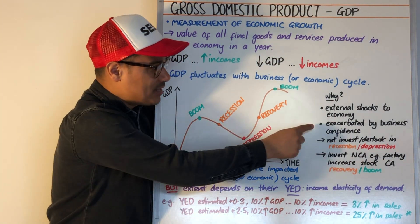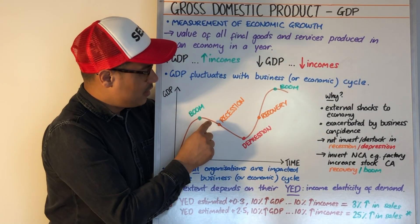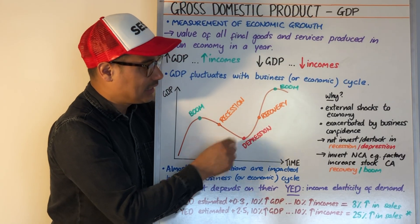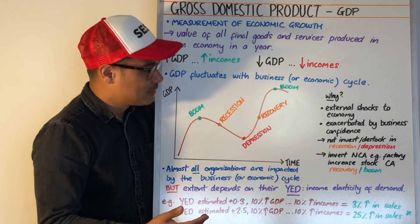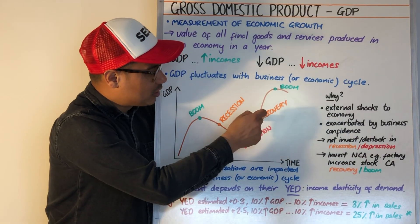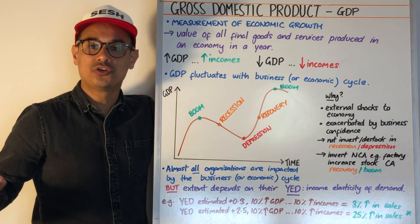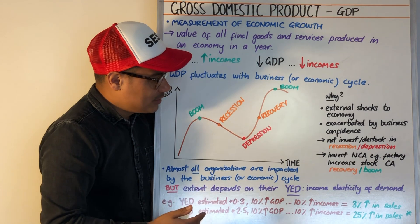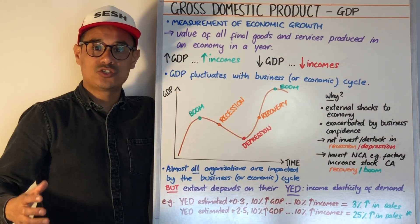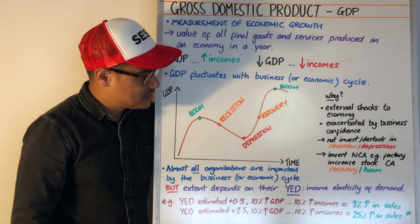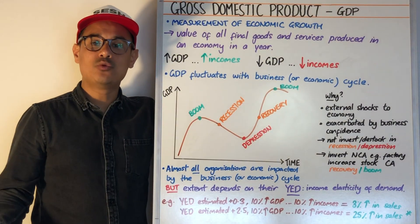When you have these external shocks, they tend to be exacerbated by businesses and business confidence. In a recession or depression phase, businesses are unlikely to invest and are likely to de-stock — reducing the size of their stock — because they expect less in sales. On the other side, in a recovery or boom phase, businesses are likely to invest more in capital, in fixed assets such as a factory, and also to restock, with stock being a current asset. So their strategies will clearly depend upon the business or economic cycle and where you are within it.